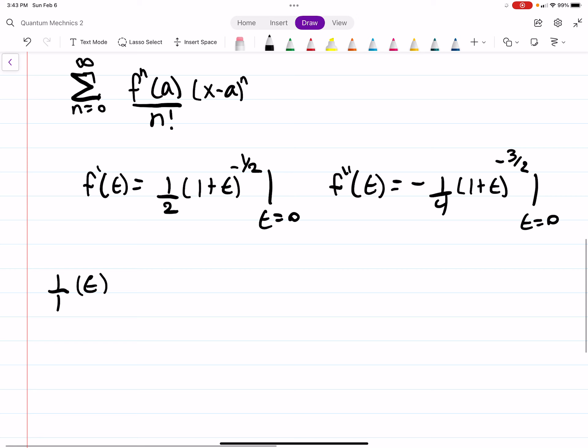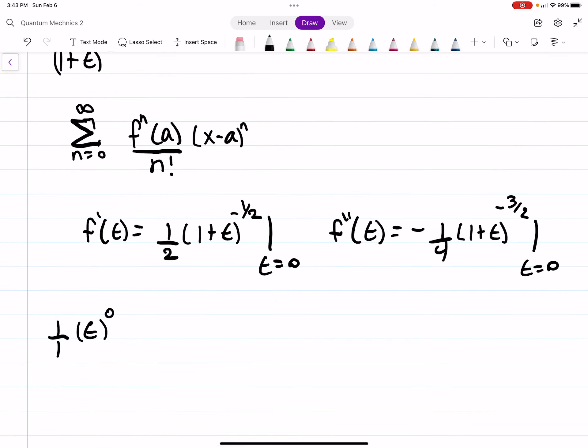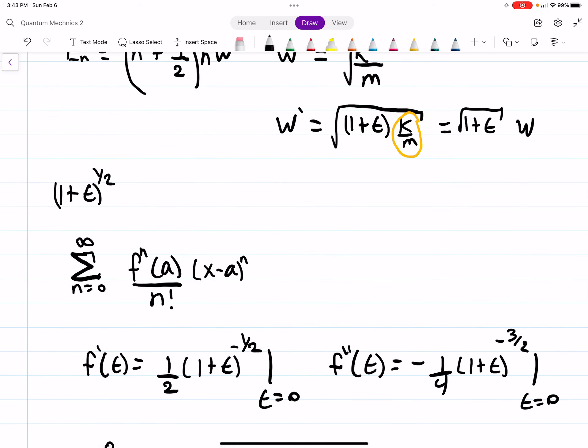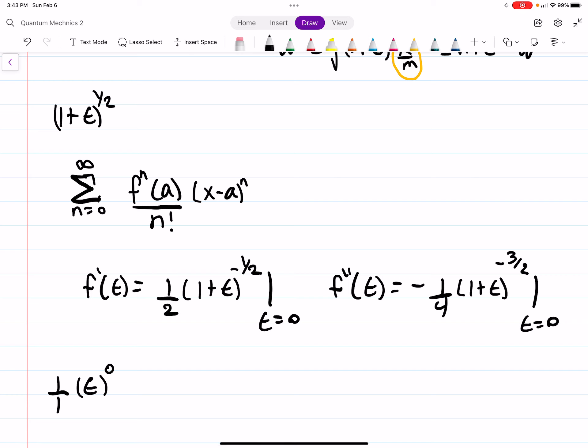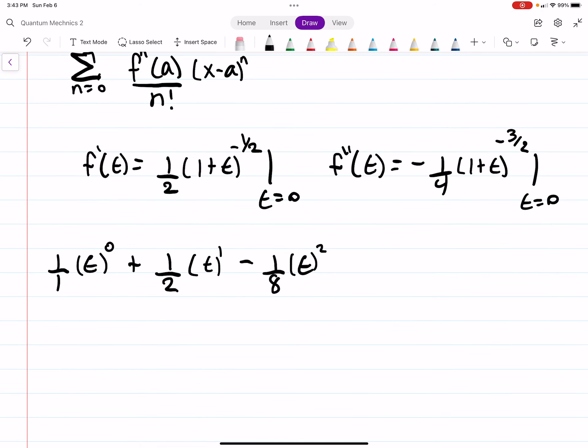So we get 1 over 0 factorial times ε^0, which is the first term with no derivative - just our function evaluated at ε=0, which is 1. Then plus (1/2)ε to the first power from the first derivative, and then minus (1/8)ε² from the second derivative. So √(1+ε) to second order is 1 + (1/2)ε - (1/8)ε².